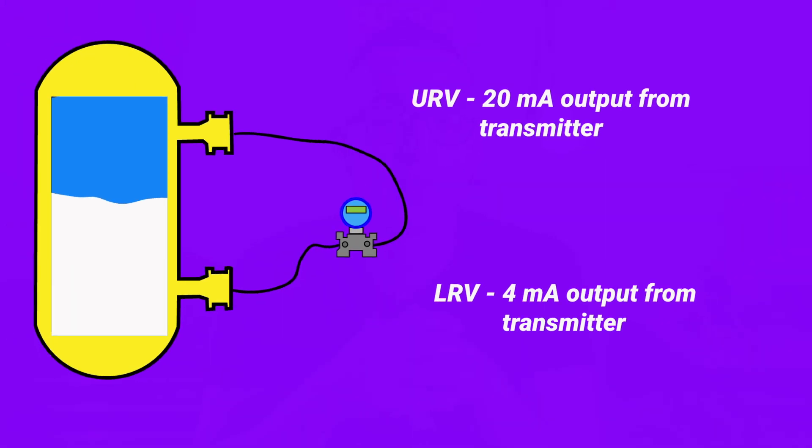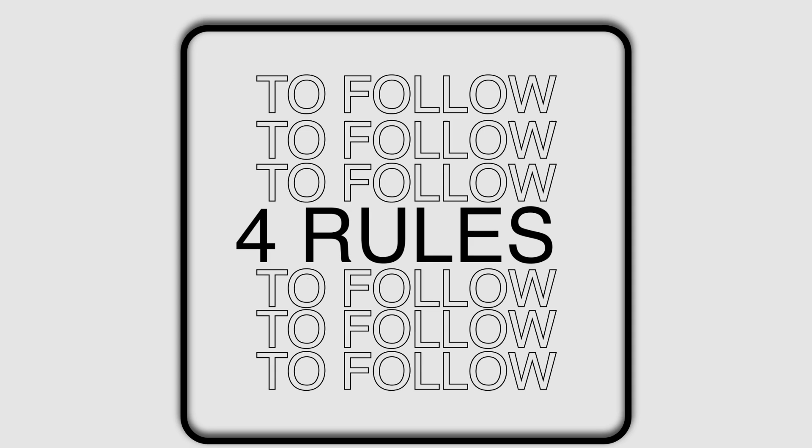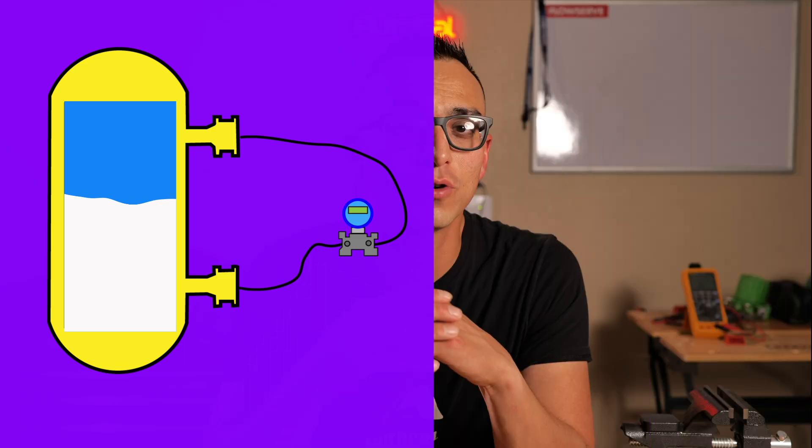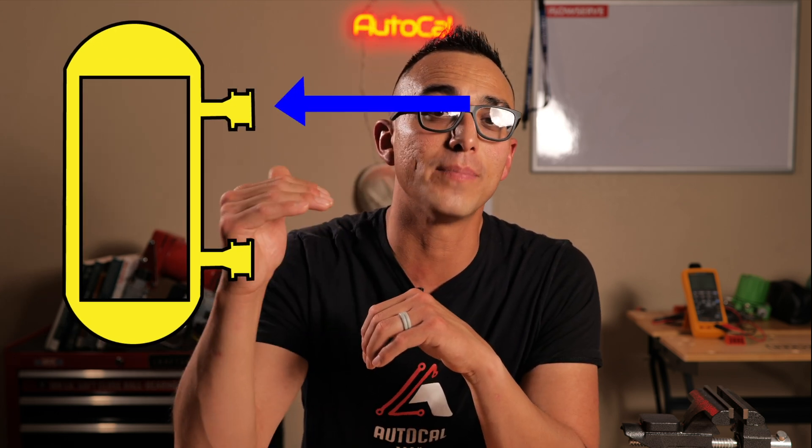However in order for the interface level transmitter to work correctly we got to make sure we follow a few rules to be able to set this up. Rule number one, since this type of level transmitter uses differential pressure to calculate its interface level, the level must always be above the low side or the top tap.